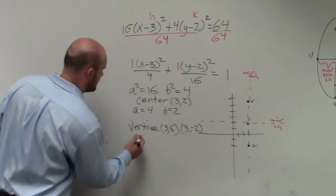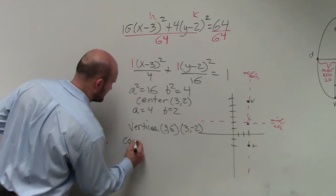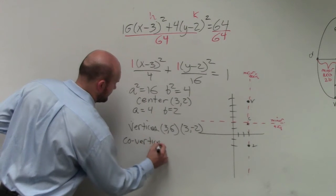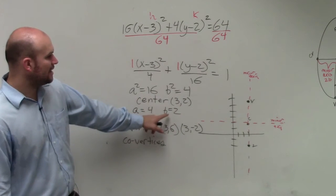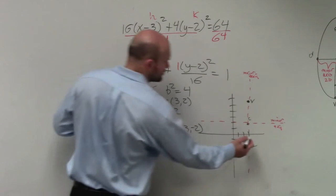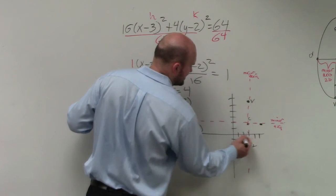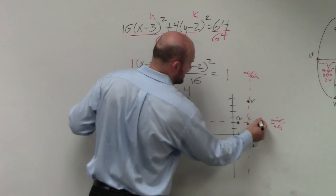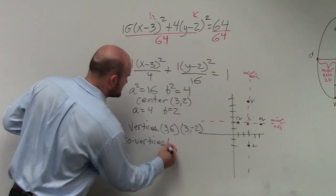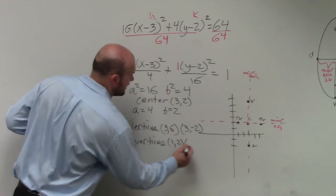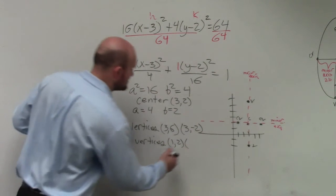Now I find the co-vertices. Remember, the co-vertices and vertices are on perpendicular axes. This distance is 2, so I'll go to the right 2 and to the left 2. So that's 1 comma 2 and 5 comma 2.